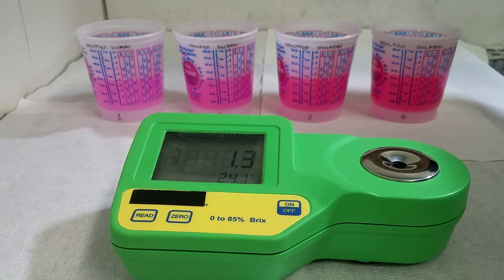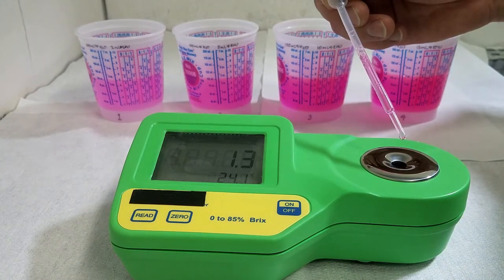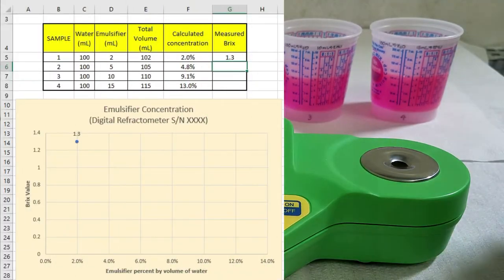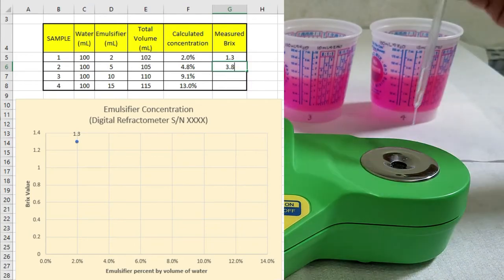Remember to clean the pipette and the window sample. Taking the second sample, we are going to get the second measurement which is 3.8. So we have the second chart point.